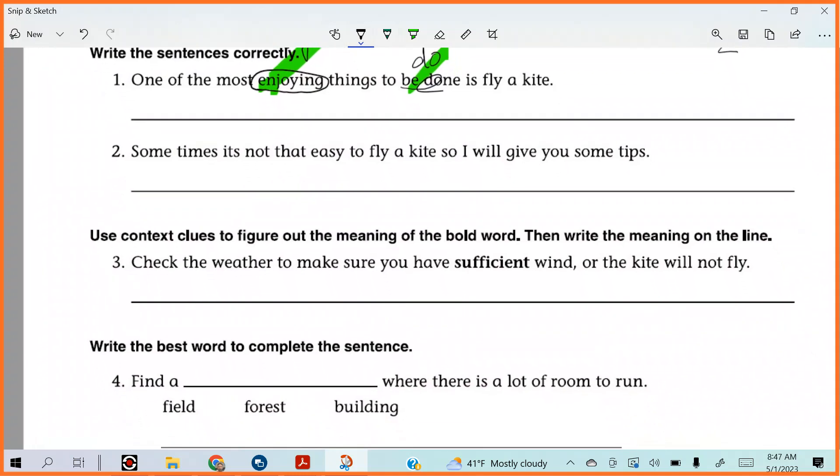Let's take a look at the next one. Sometimes, uh-oh, sometimes it's not that easy to fly a kite. So I will give you some tips. We have two complete sentences sandwiched in between that conjunction. Fred, your hand went up pretty fast. Sometimes is one word. You know how many times I see grown adults mess that up on Facebook? Don't be that person. Good, Fred.